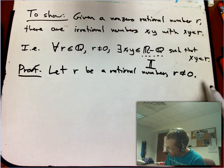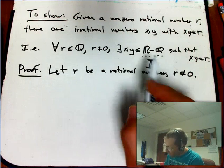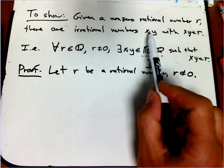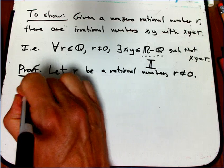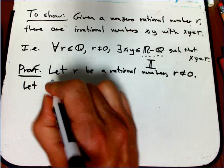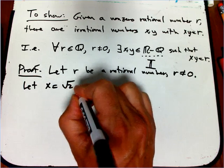And we're going to assume it's not zero. And now we're going to do this constructively. We're trying to show the existence of two things, and we're going to do it very constructively. Basically, we're just going to let X be the square root of two.